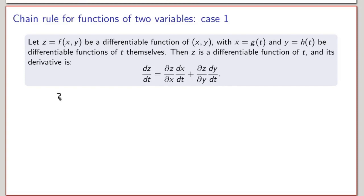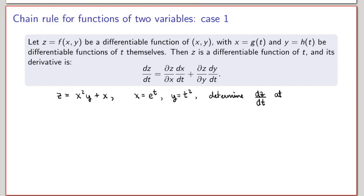Let's look at an example. Suppose that I'm given the function z equal to x squared y plus x, and I have that x is a function of t given by e to the t, and y is equal to t squared. So both x and y are differentiable functions of t, and suppose I want to determine the derivative of the function z with respect to t at the point t equals zero. I'm going to use the chain rule formula for functions of two variables. There are a few things I need to calculate: the partial derivatives of z, and the derivatives of x and y with respect to t.